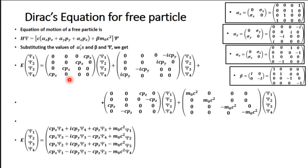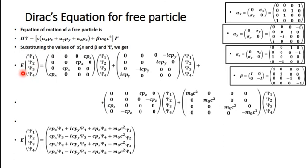Similarly we get the matrix for alpha-y p-y and alpha-z p-z. On the left side we write H psi as E psi, and psi again as a column matrix of psi-1, psi-2, psi-3, psi-4. So it becomes E psi equal to this full matrix equation — this is the Dirac equation.